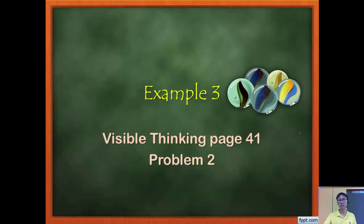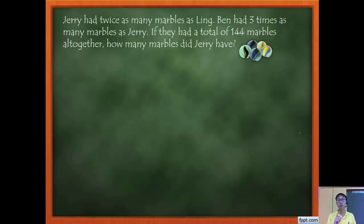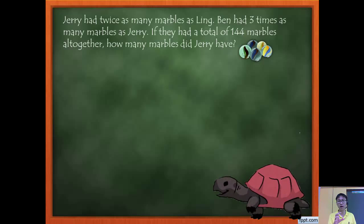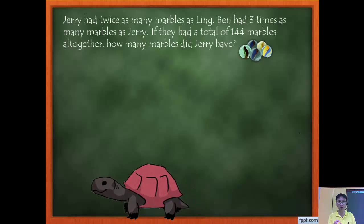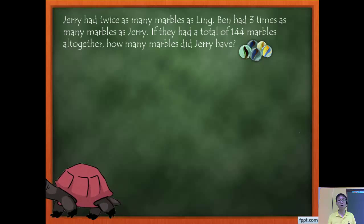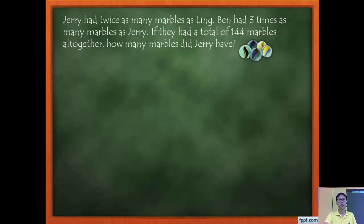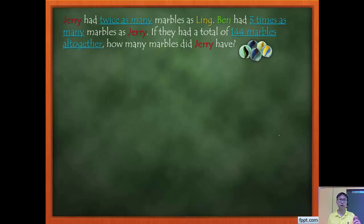Let's look at Example 3 from Visible Thinking page 41, Problem 2. Take out your video worksheet and try to solve this problem on your own first. We have three people again: Jerry, Ling, and Ben. This time it's a little different — Jerry has twice as many as Ling, but Ben has three times as many as Jerry. That's the main difference from the previous example.